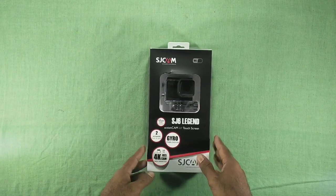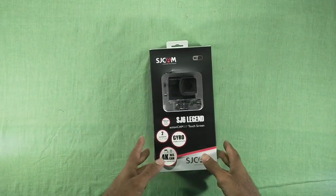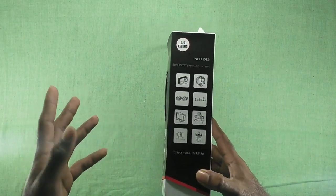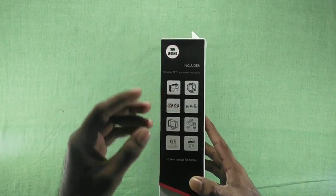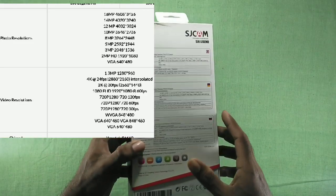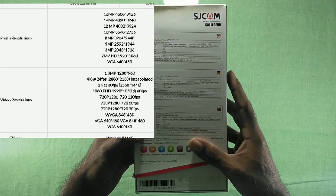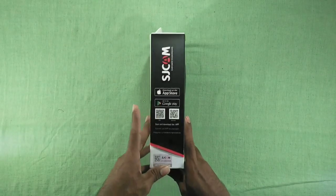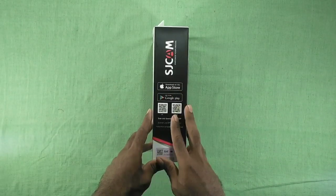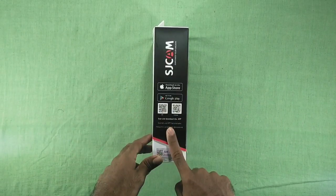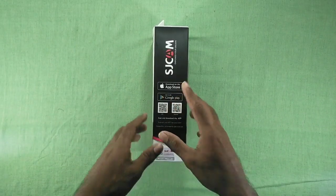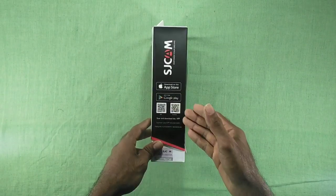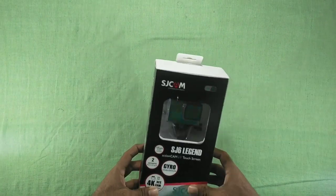This SJCAM also provides a couple of accessories along with this box, so we don't need to spend anything more for buying those accessories. SJCAM also specifies their specifications and image resolutions on the back side of this box. We can also connect this camera to a smartphone with the help of an application which we can download from the App Store for iPhone and also from the Google Play Store with the help of those QR codes.